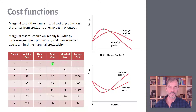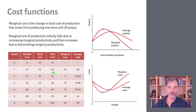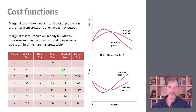The marginal cost is the additional cost incurred for producing one more unit of output — just as marginal product is the additional output from one more unit of labor. Going from zero to one unit, my marginal cost is 10. The average cost is higher: total cost of 20 divided by one unit gives an average cost of 20. For two units, the total cost goes from 20 to 27, so the marginal cost for the second unit is 7.